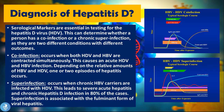These serological markers, essential in testing for HBV, can determine whether a person has a co-infection or a chronic super-infection, as they are two different conditions with different outcomes. A co-infection occurs when both HDV and HBV are contracted simultaneously, causing an acute HDV and HBV infection. Depending on the relative amounts of HBV and HDV, one or two episodes of hepatitis occur. Looking at the graph, we see HDV RNA and HBsAg enter the blood at the same time, with peaking of IgM anti-HDV, total anti-HDV antibodies, and then anti-HBs antibody.